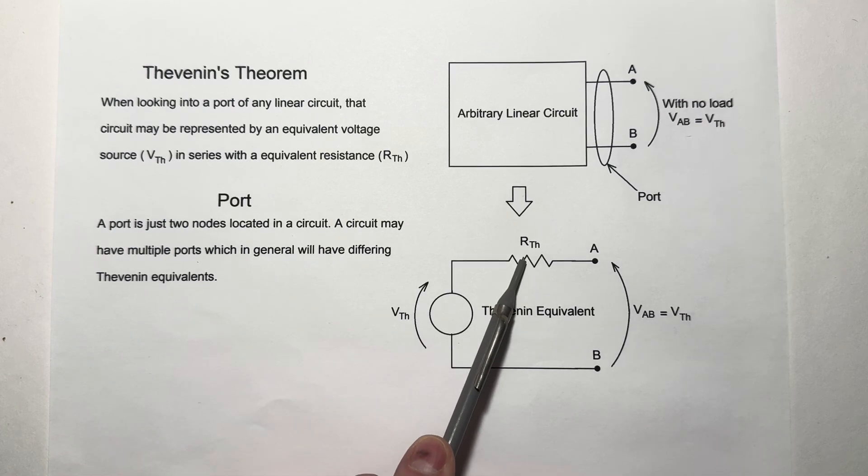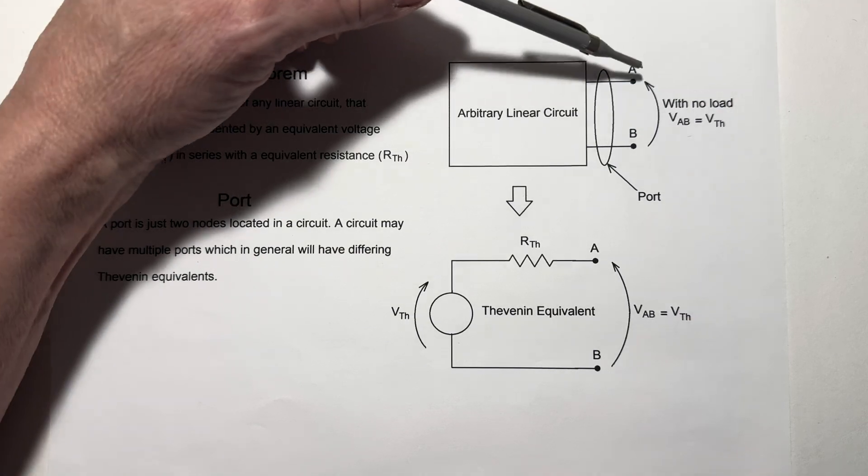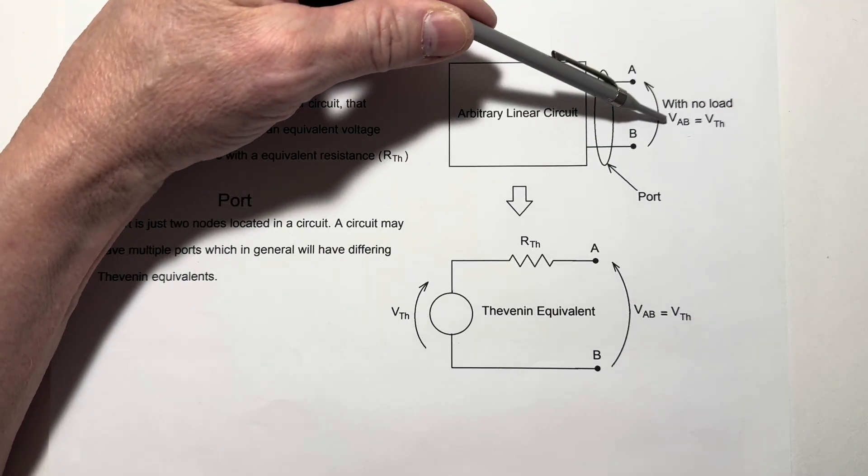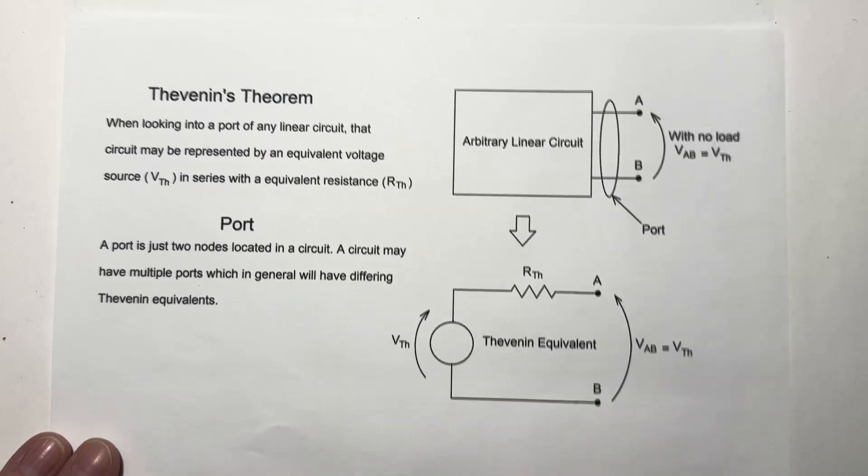This is the equivalent Thevenin resistance and the Thevenin voltage. The open circuit voltage, here V-sub-AB, is the Thevenin voltage for the circuit. The Thevenin resistance can be determined a couple of different ways, and that's what we'll look at briefly right now.